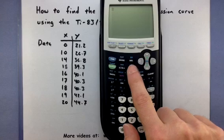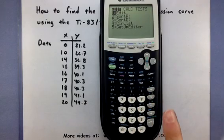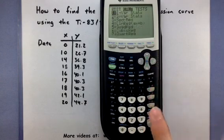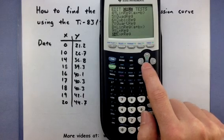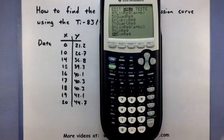Now press your stat button. Press the right arrow button where it says calc. And go all the way down until you find the one that says exponential regression. This on my calculator is the 10th option. Press enter.